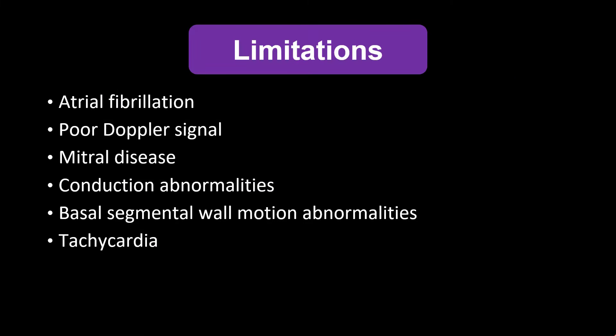We do want to mention some limitations of this technique. Atrial fibrillation results in variable diastolic filling time and therefore variable E and E-prime velocity. Poor Doppler signal is important because you can under- or overestimate both E and E-prime. Mitral valve annular calcifications or mitral regurgitation are both contraindications to this technique. Additional limitations include conduction abnormalities, basal segmental wall motion abnormalities, and tachycardia, where you often get fusion of your E and A waves.